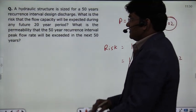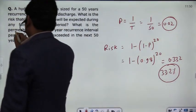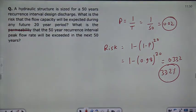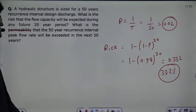What is the probability? This is wrongly written here. This is probability. What is the probability that the 50 year recurrence interval peak flow rate will be exceeded in the next 50 years?